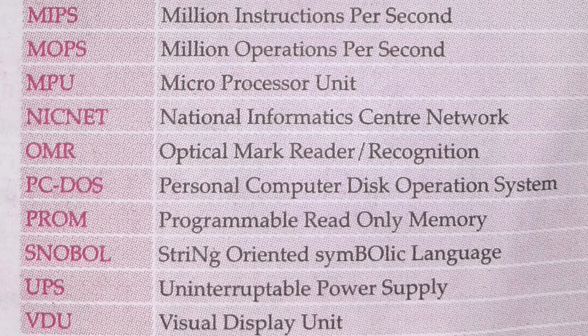The next one is MOPS — Million Operations Per Second. After that is MPU — Microprocessor Unit. CPU stands for Central Processing Unit, and MPU, Microprocessor Unit, is a computer processor that incorporates the functions of a computer's CPU on a single or a few ICs.